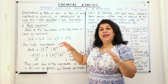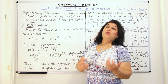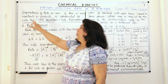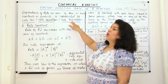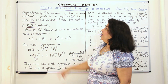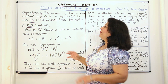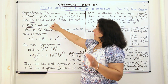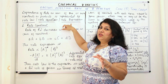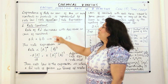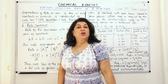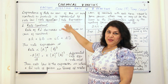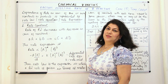Now this dependence of the rate of a reaction on concentration is given by an expression which is known as the rate law, also called the rate equation or the rate expression. So the dependence of rate on the concentration of one or more reactants or products is represented by the rate law. From this rate law you can also find out what is the rate constant.